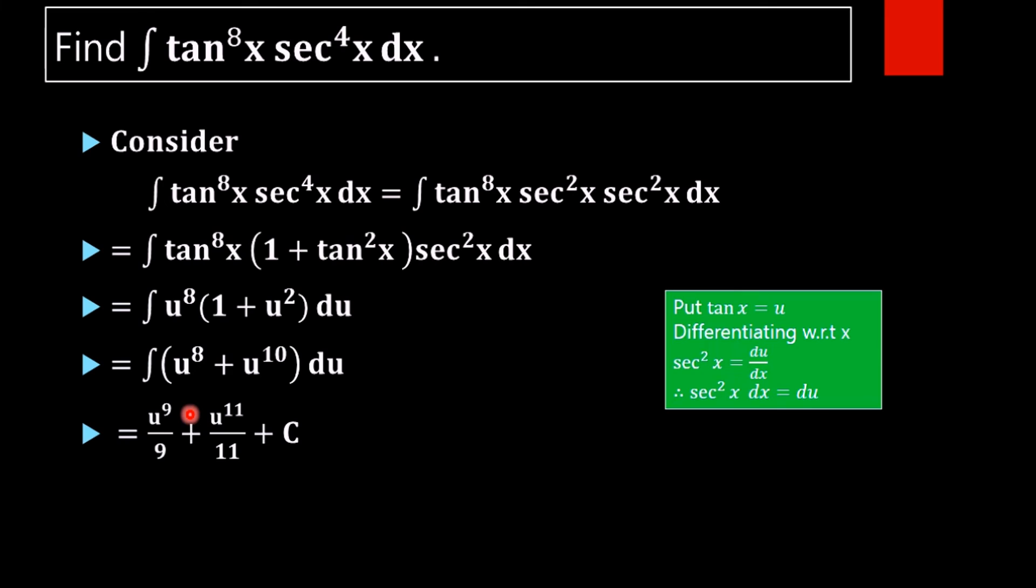In the next step we are substituting u as tan x to get the final result. That is tan^9(x) by 9 plus tan^11(x) by 11 plus c. This is the required result.